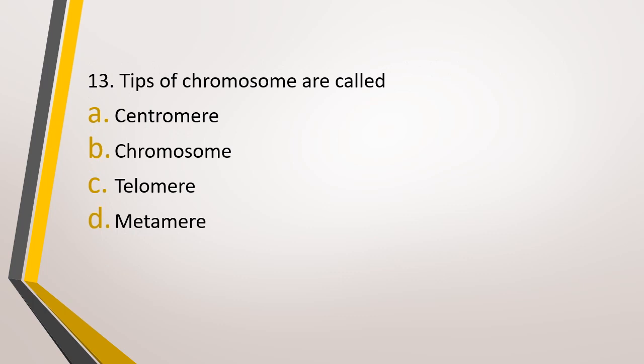Question number 13. Tips of chromosome are called, option A: centromere, option B: chromosome, option C: telomere, option D: metamere. The correct answer is option C, telomere.